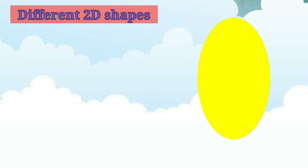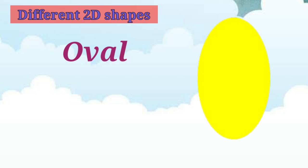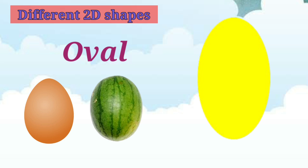Children, tell me, what shape is this? It's an oval. Just like a circle, an oval has no sides nor corners. For example, an egg and a watermelon.